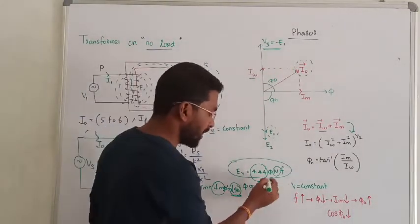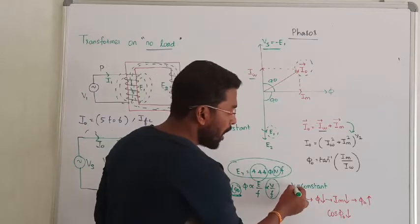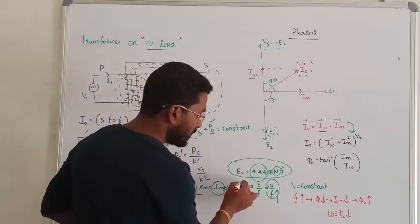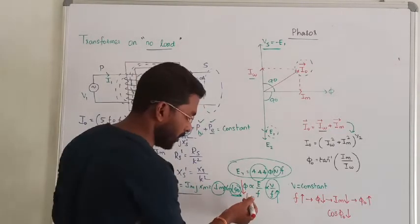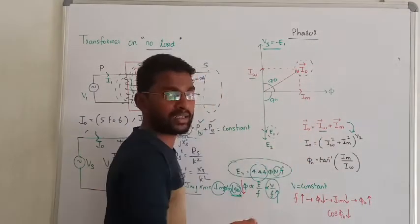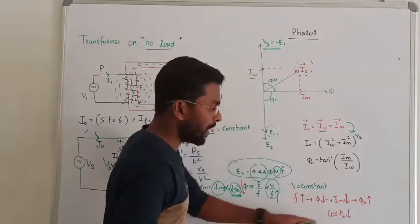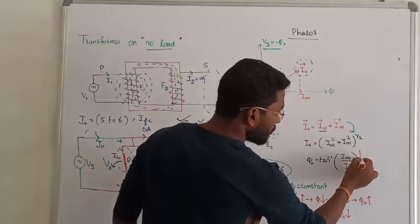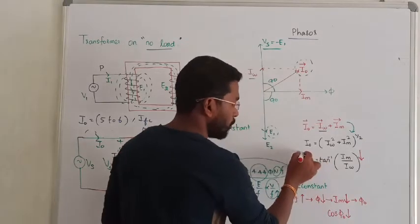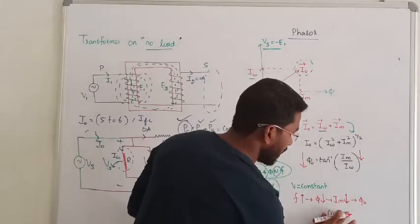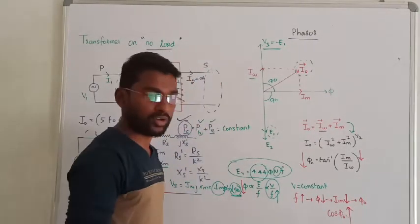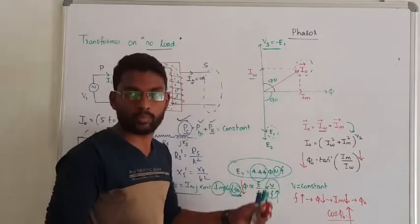If we fix the supply voltage but increase the frequency, since flux is inversely proportional to frequency, flux will decrease. Since flux production is responsible for magnetizing current, magnetizing current will also decrease. With magnetizing current decreasing, the no-load angle decreases and the power factor improves. So the conclusion is: increasing frequency leads to improved power factor.